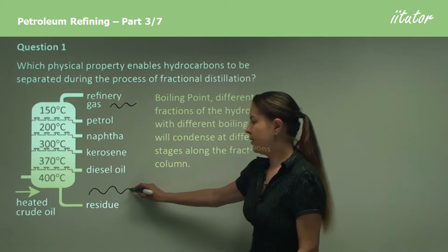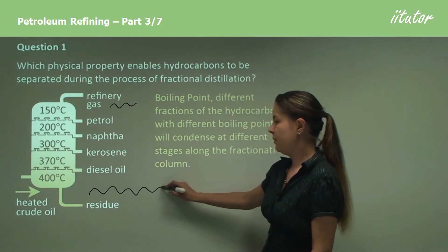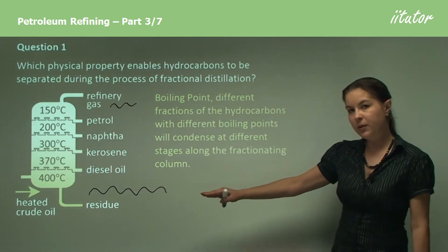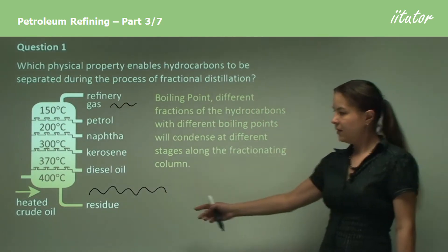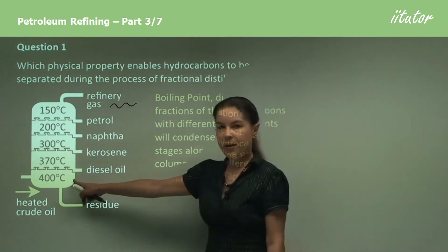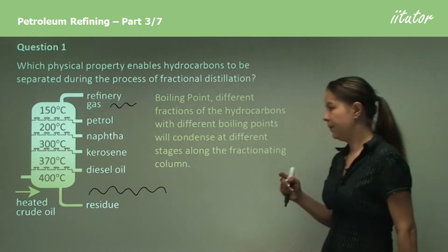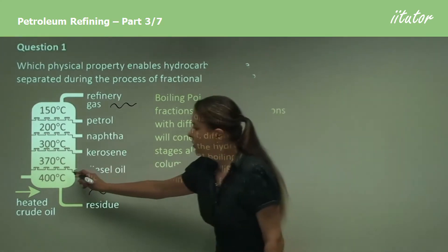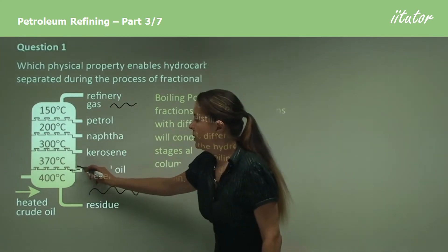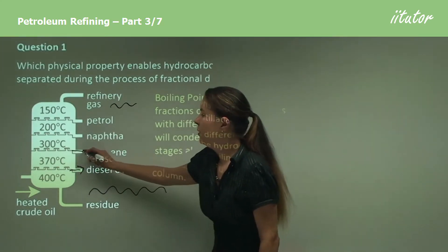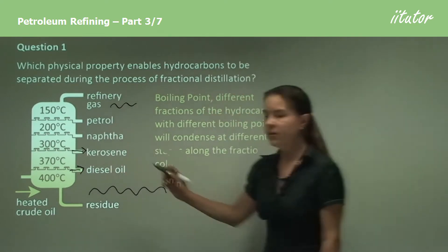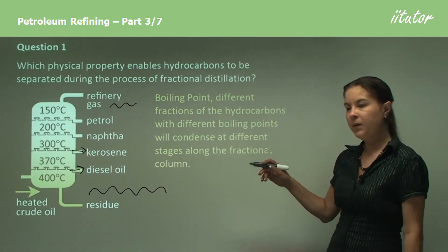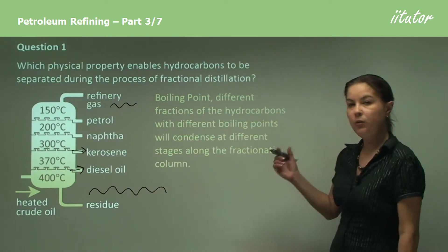The larger the hydrocarbon, the lower down the column it will condense, and the higher the boiling point. Now, just as another point to note: when we take things off a fractional distillation column, we call it elution.